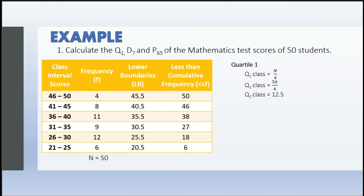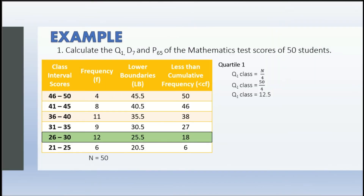Using the less-than cumulative frequency, note that the 7th to 18th scores belong to the class interval 26 to 30. So the 12.5 score is also within that class interval — the Q1 class is 26 to 30. We can now identify the given values: lb = 25.5, n = 50, cf sub b (cumulative frequency before) = 6, frequency = 12, and the class size i = 5.